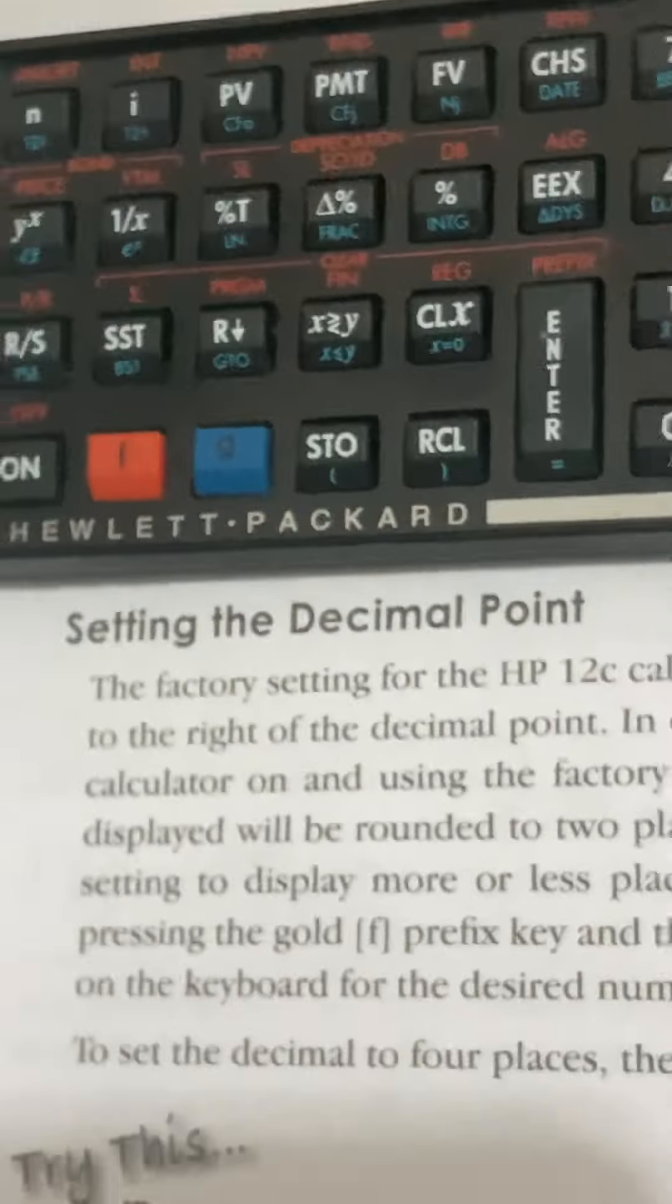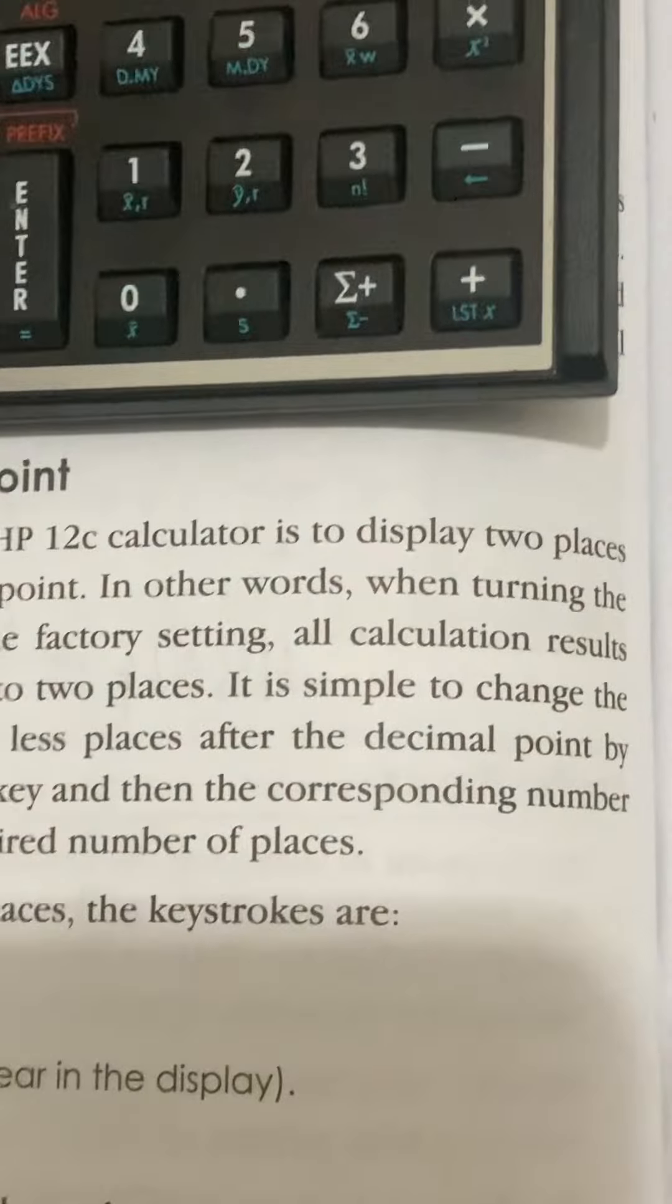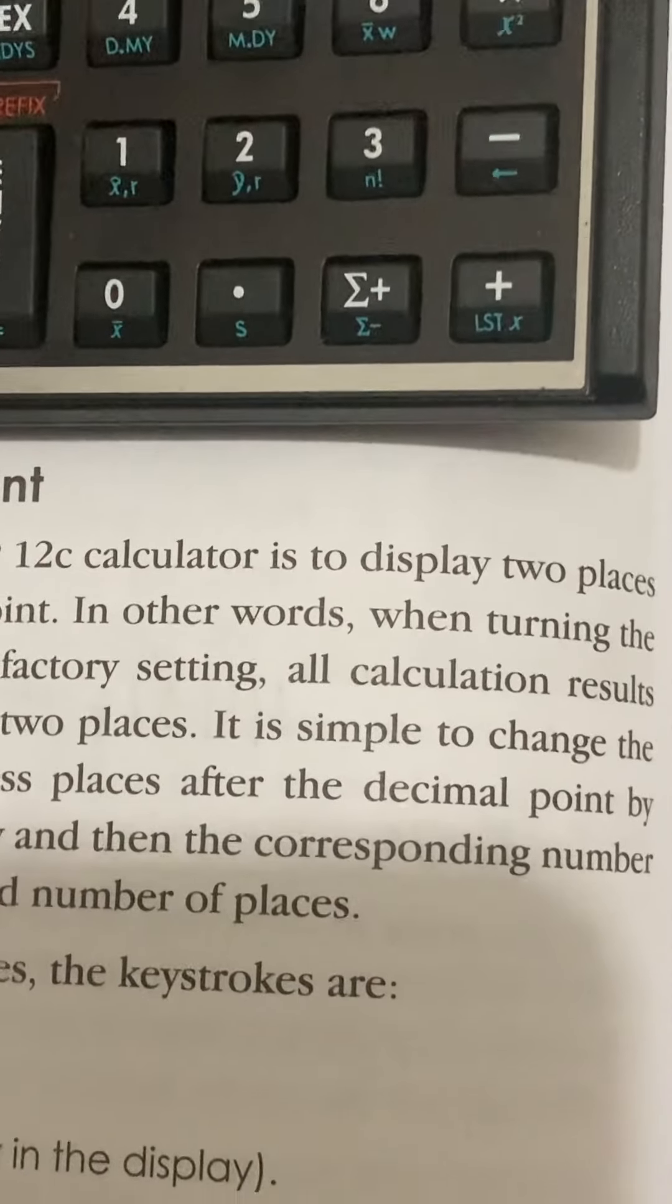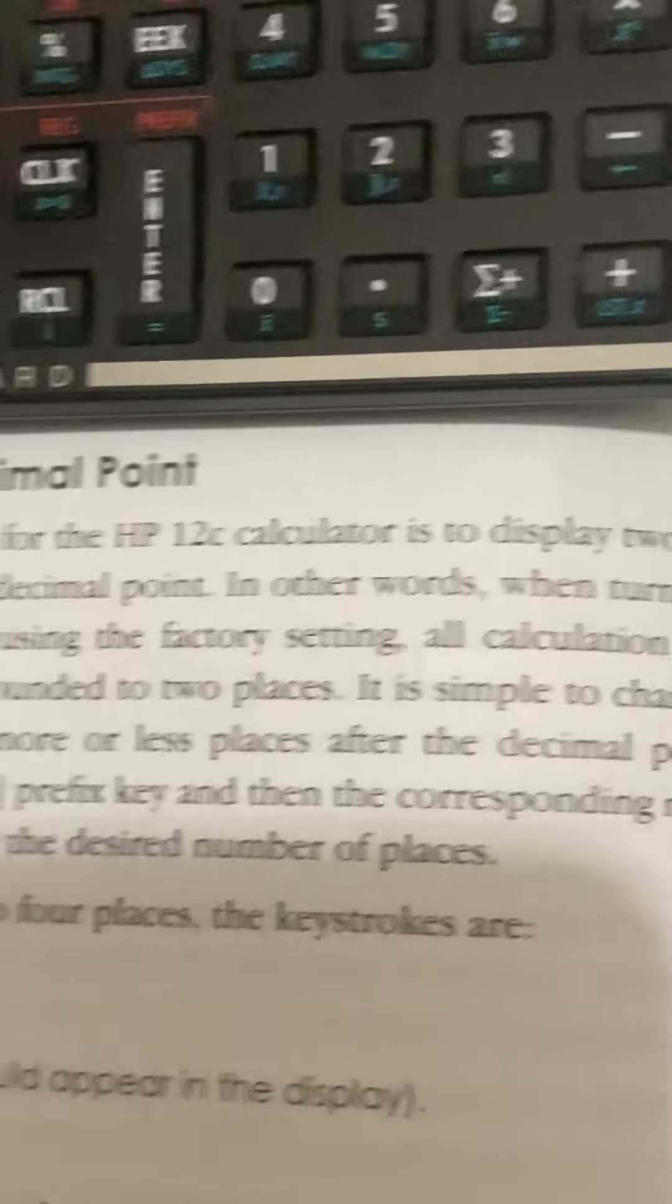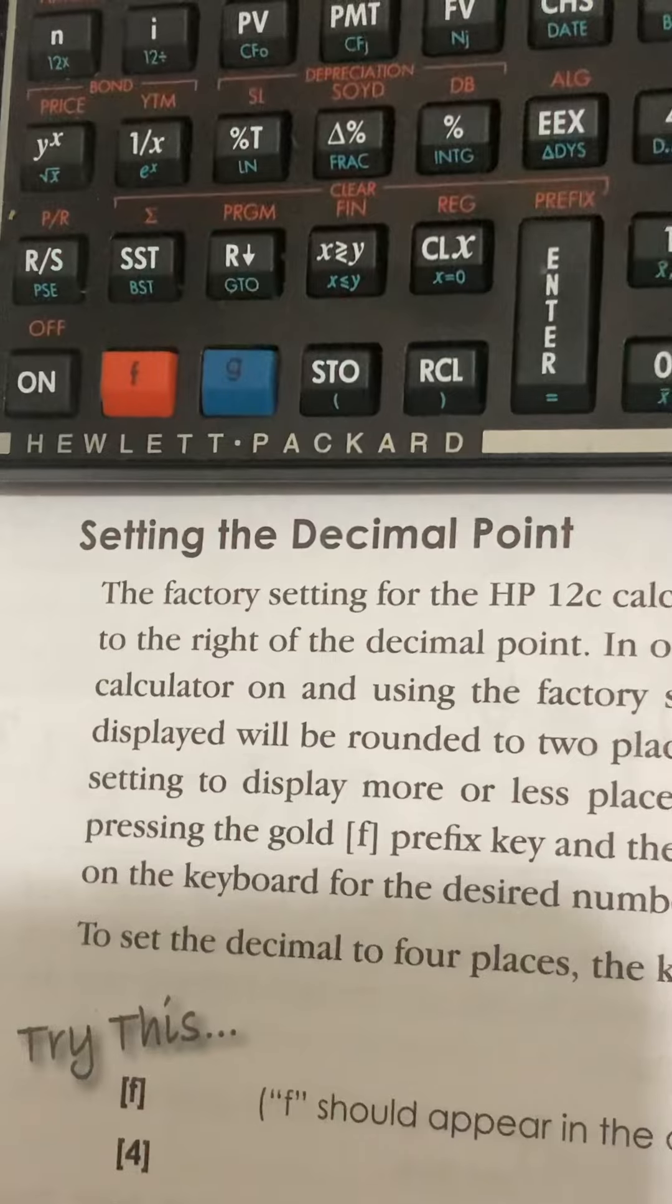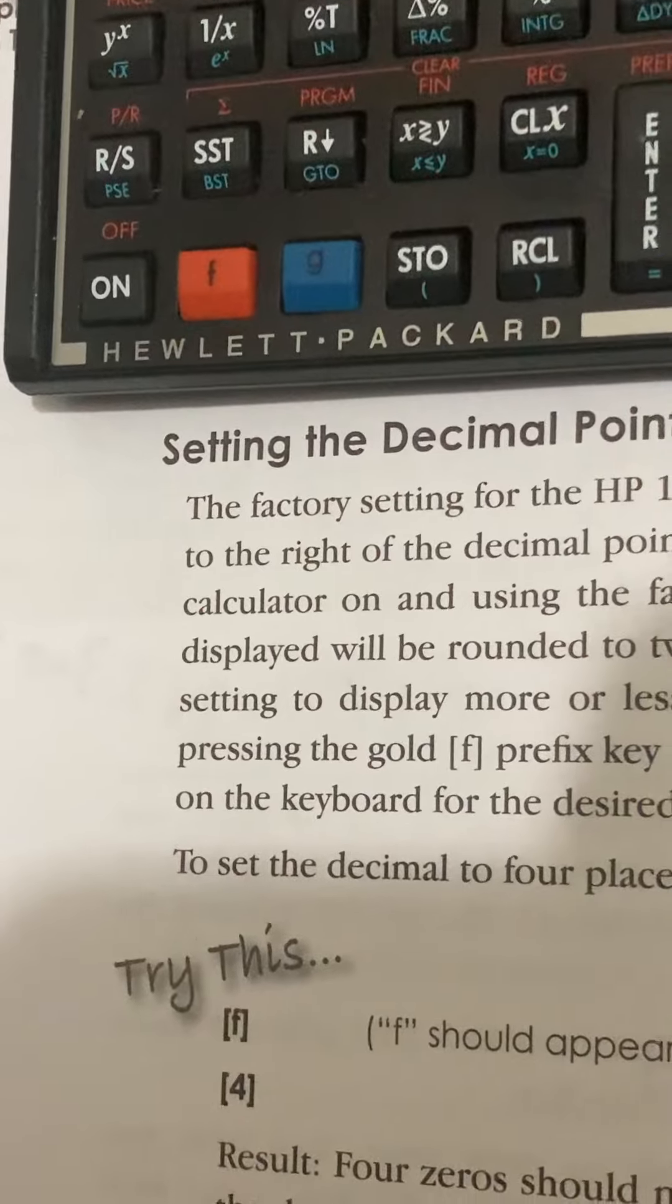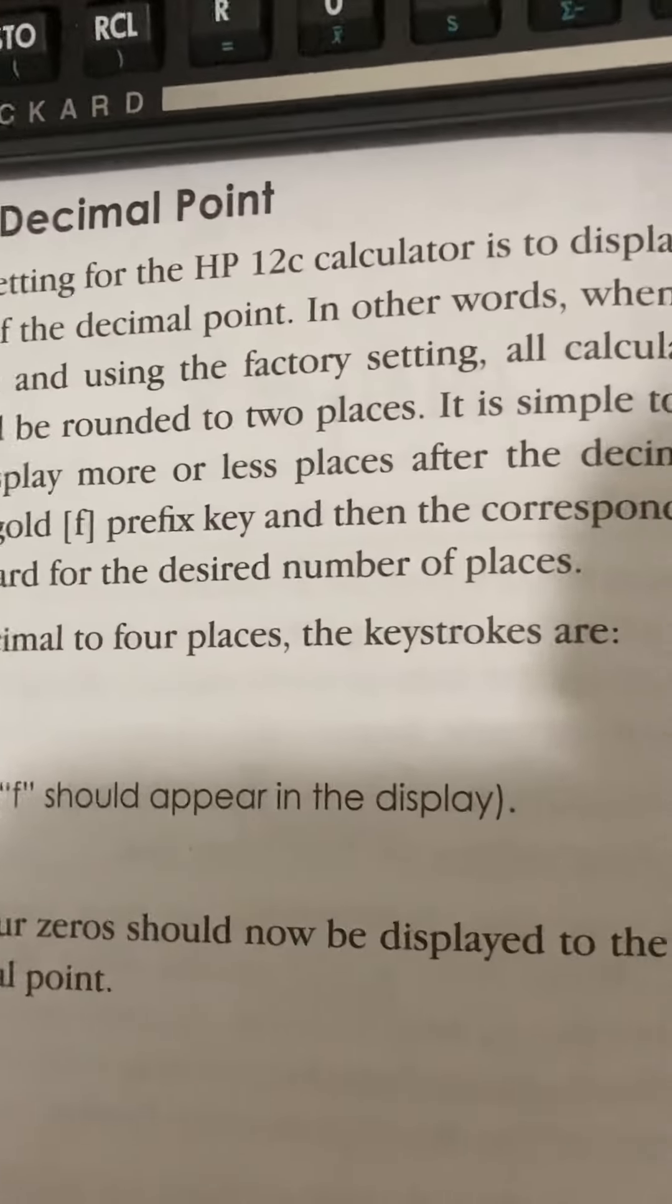Setting the decimal point. The factory setting for the HP 12C calculator is to display two places to the right of the decimal point. In other words, when turning the calculator on and using the factory setting, all calculations results displayed will be rounded to two places. It is simple to change the setting to display more or less places after the decimal point by pressing the gold F shift prefix key. And then the corresponding number on the keyboard for the desired number of places. To set the decimal to four places, the keystrokes are: Try this.